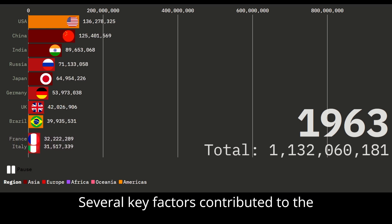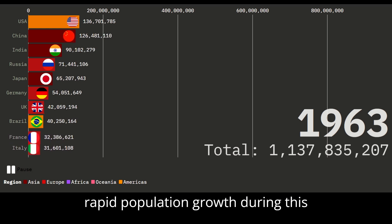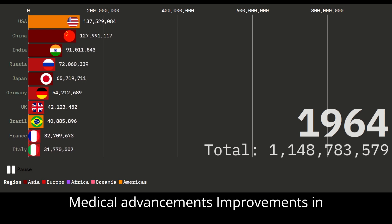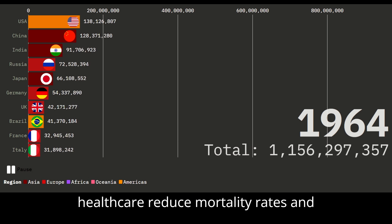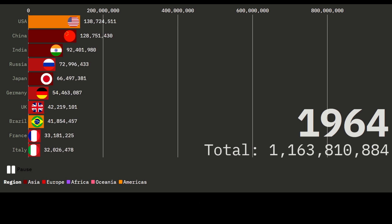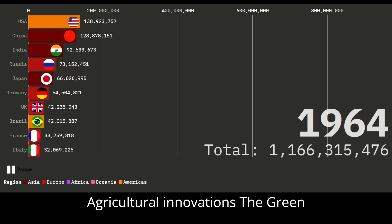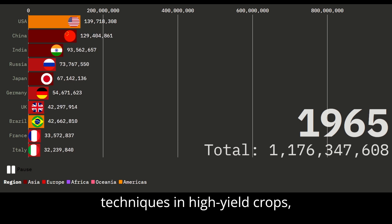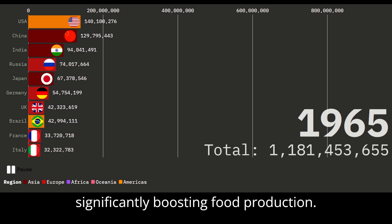Several key factors contributed to the rapid population growth during this period. Medical advancements and improvements in healthcare reduced mortality rates and increased life expectancy. Agricultural innovations — the Green Revolution — introduced new farming techniques and high-yield crops, significantly boosting food production.